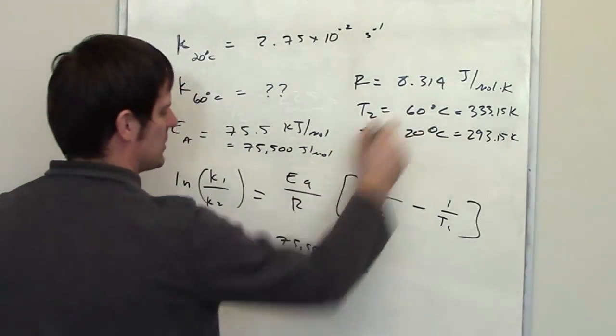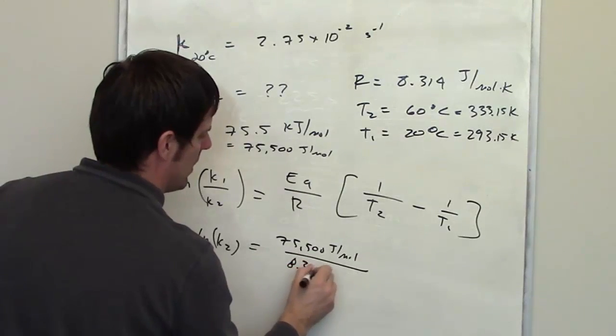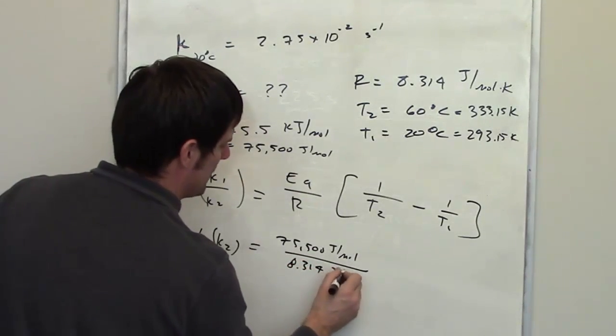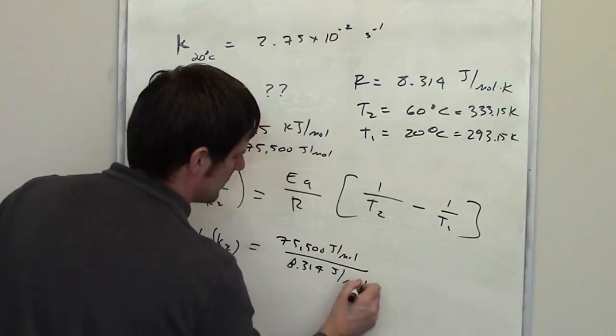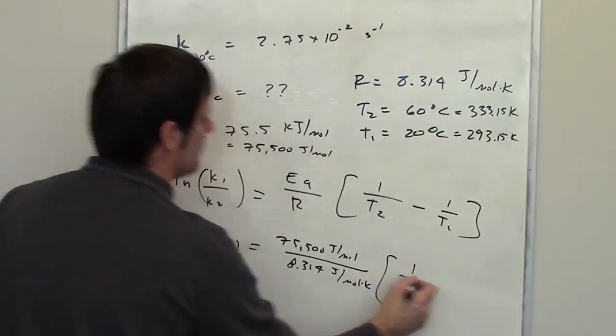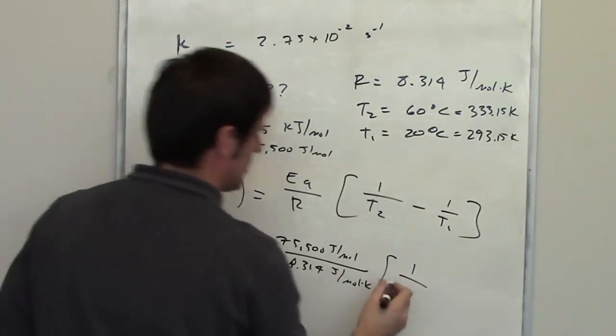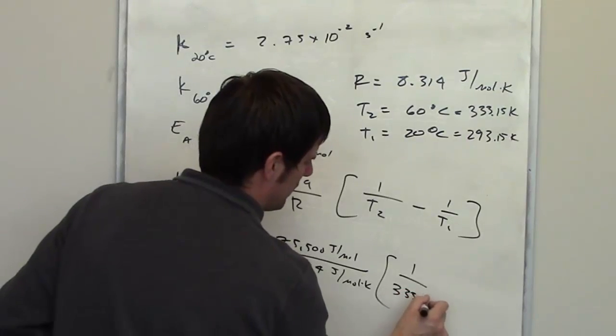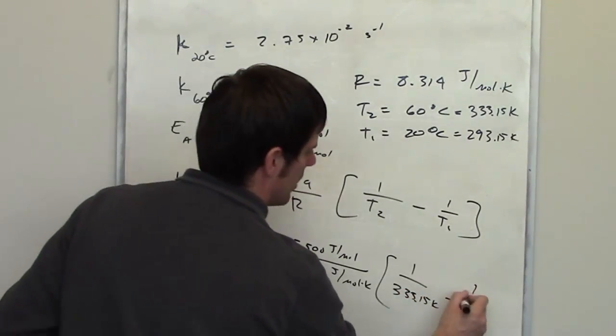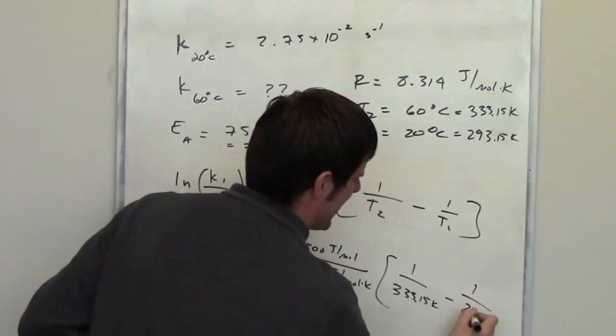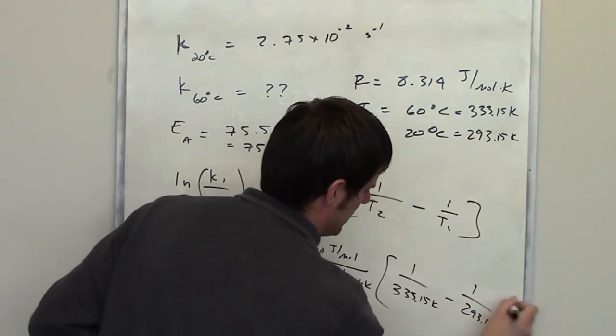I'll divide that by the ideal gas constant, 8.314 joules per mole kelvin. And then I multiply it by 1, divided by T2, which is 333.15 kelvins, minus 1 over T1, which is 293.15 kelvins.